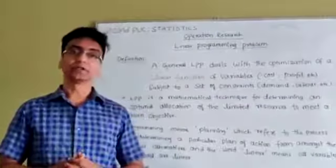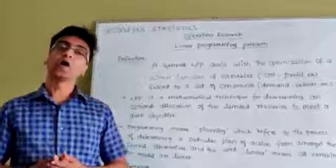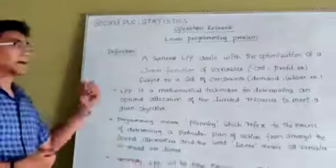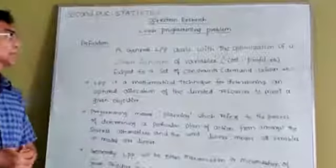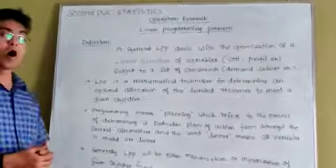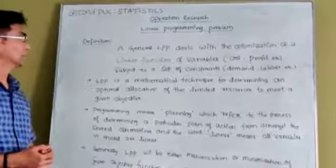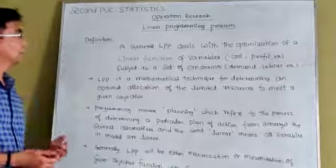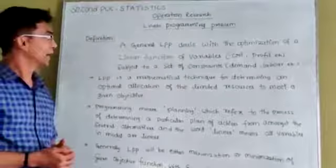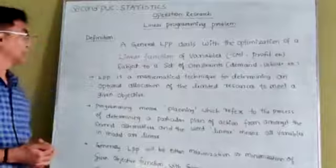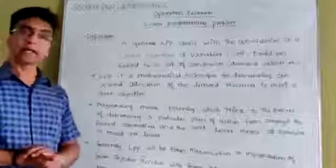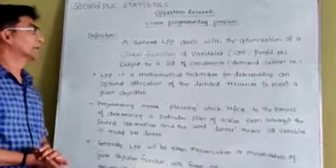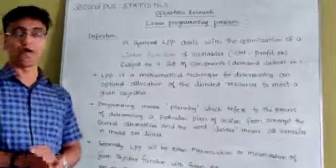As part of the definition, a general LPP deals with the optimization of a linear function of variables, which may be cost or profit, subject to a set of constraints such as demand, labor, etc.